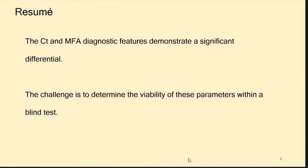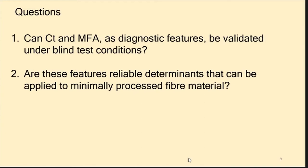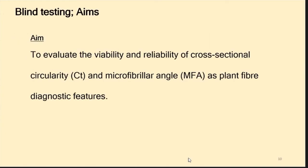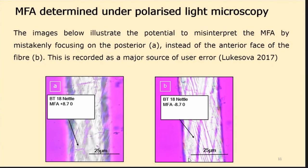Circularity and microfibre angle demonstrate a significant differential. The challenge is: will they stand up to the blind test protocol, which is a randomised collection? The aim is to evaluate the reliability of plant fibre diagnostic features. A problem identified was a lack of standardised orientation — the direction or position from which you look at the fibre. The microfibre angles are visible at this magnification.